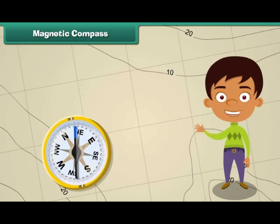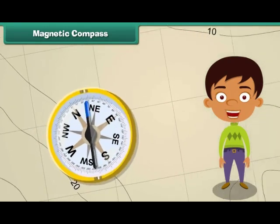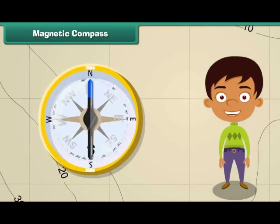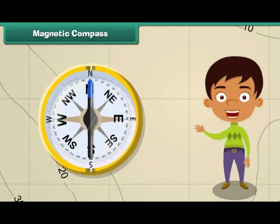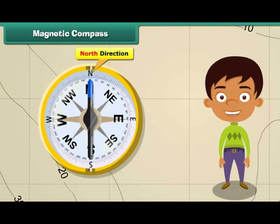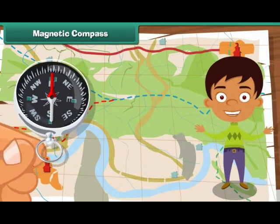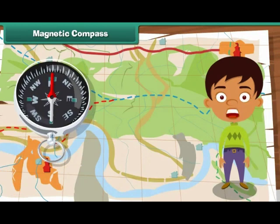A magnetic compass is a simple device which helps us to locate a place. It has a long needle. One end of the needle is marked N to represent the north direction. No matter where you are on Earth's surface, the needle of the magnetic compass will always point to the north direction. Thus, one can find all other directions in relation to north.